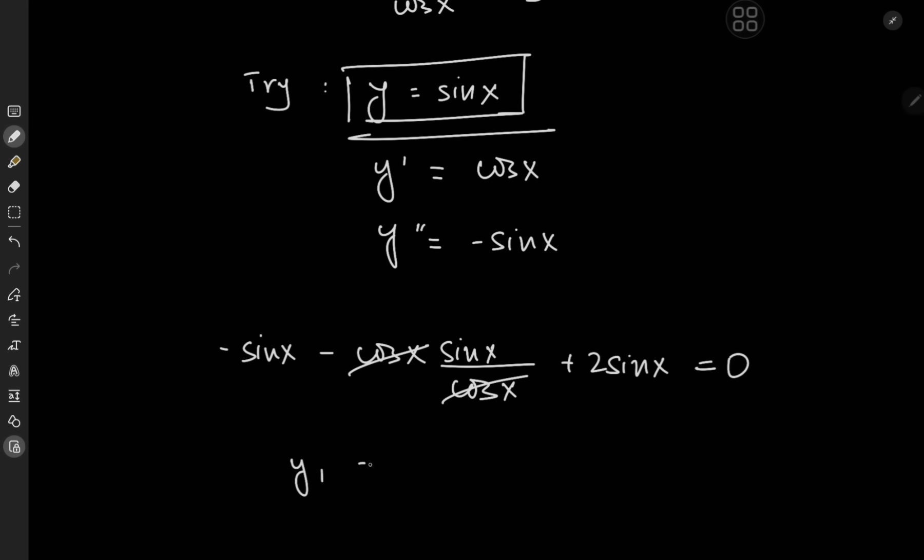Let's call this solution y sub one, so y sub one equals sine x, and we're now interested in y sub two. Y sub two is unknown as of now — we could guess our way to a solution, or we could solve it analytically using our knowledge of y sub one. I'll leave it to you guys watching at home, school, or wherever you are right now — take a guess as to what the second solution would be. And if you can't guess it correctly, we have the method I'm about to present.